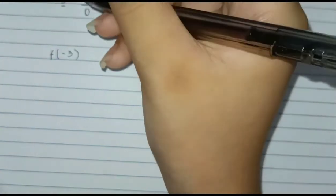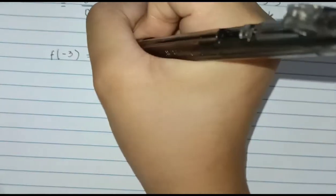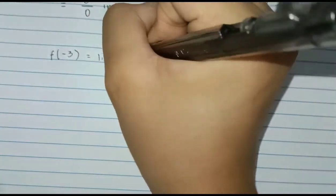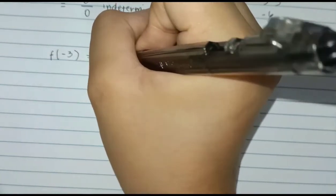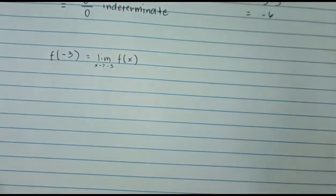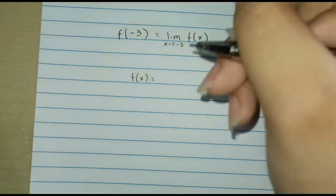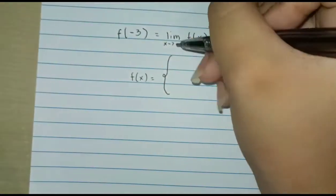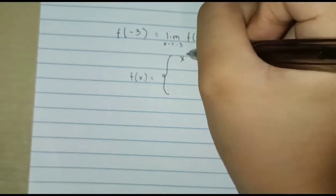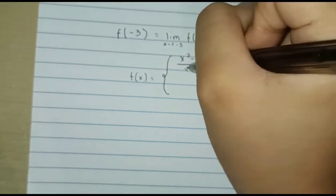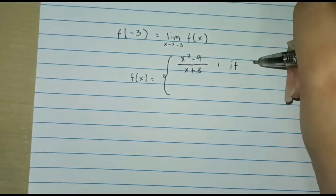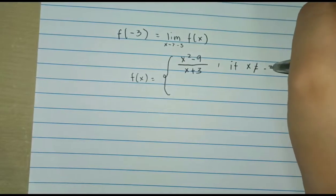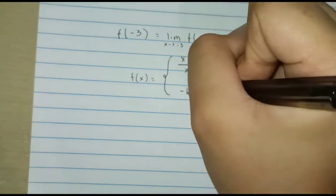Lastly, f of negative 3 equals the limit of f of x as x approaches negative 3. We use a piecewise function, so it becomes: f of x equals x squared minus 9 over x plus 3 if x is not equal to negative 3, and negative 6 if x equals negative 3.